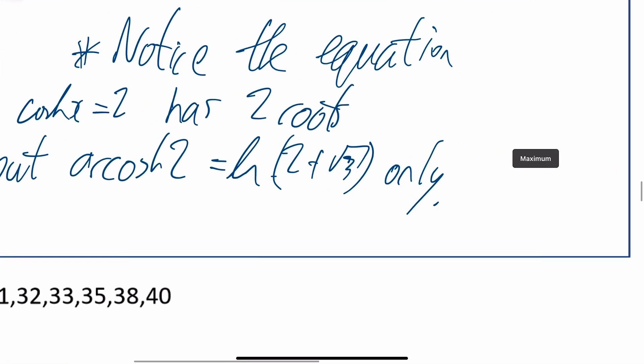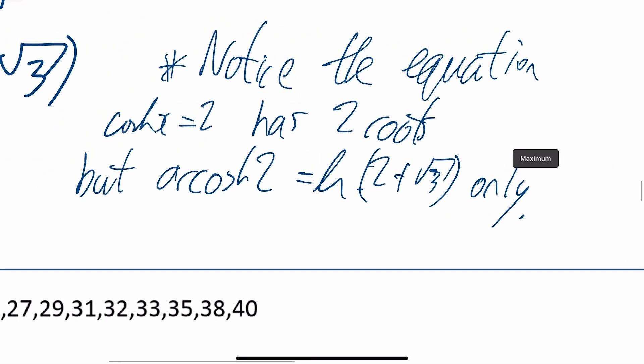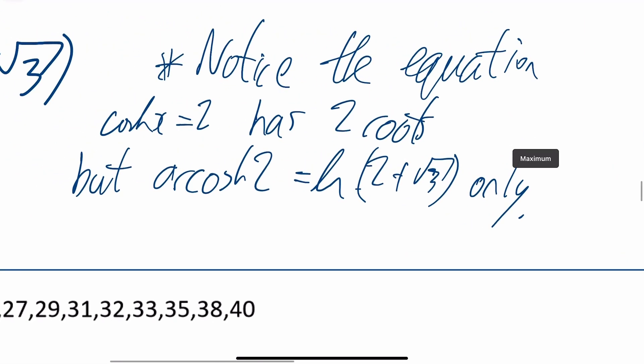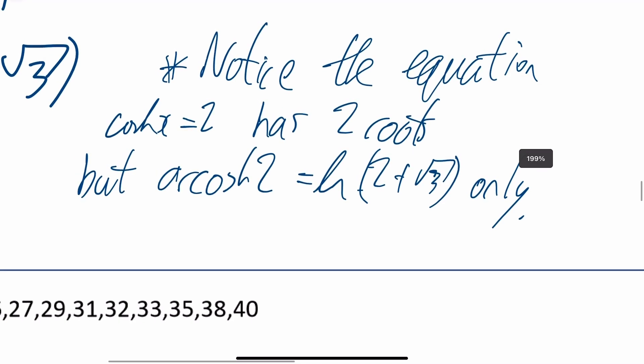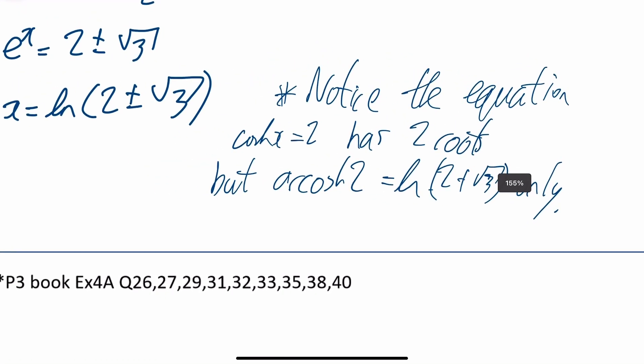Notice the equation hyperbolic cosine of x equals 2 has two roots, but arc cosine of 2 would only give one. That's why it's important to use the exponential approach when solving hyperbolic equations.